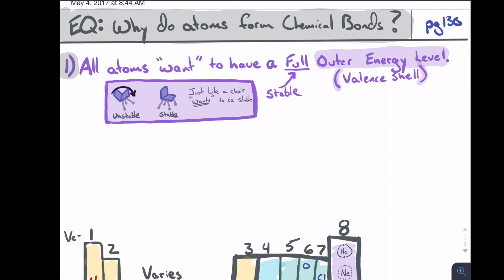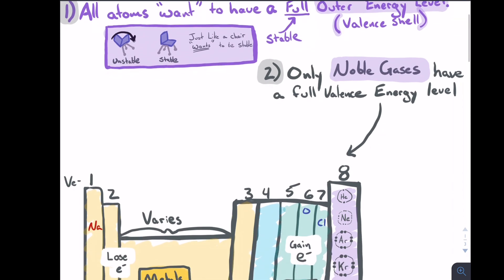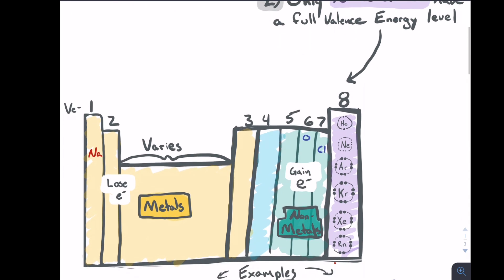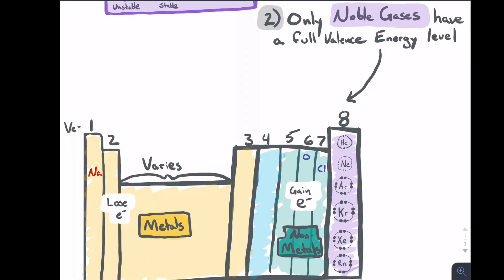Number two: the noble gases are the only ones that have a full valence energy level. If we take a look there, the noble gases are in group eight, all have a full outer energy level. As it turns out, we call this the octet rule because they have eight valence electrons in that outer shell, and that's just what happens to be very stable.